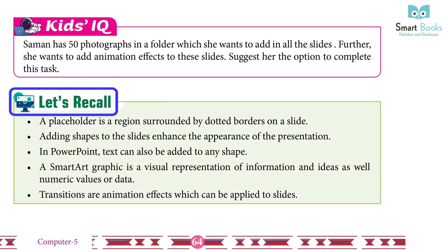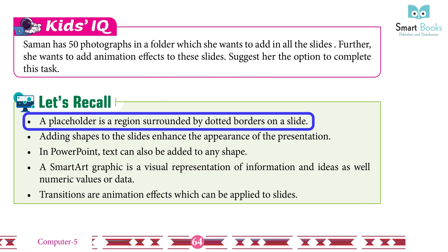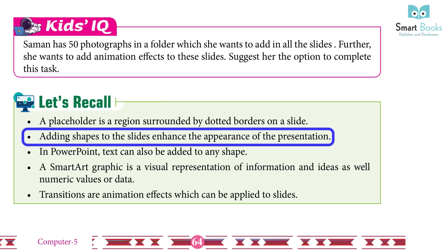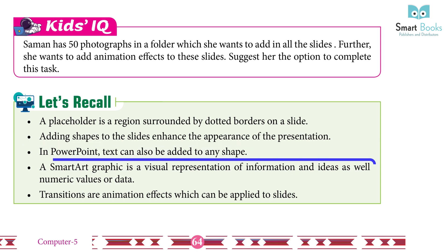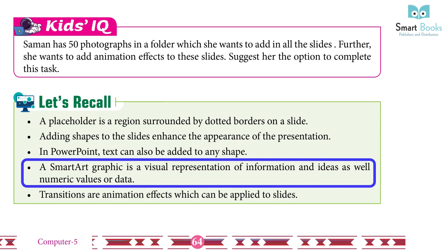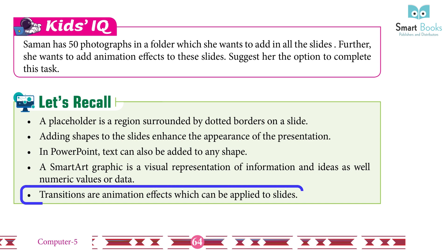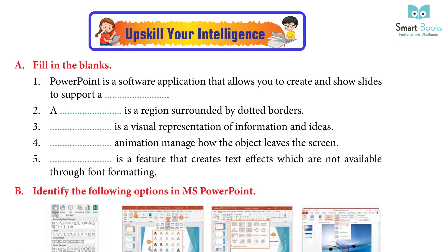Let's recall: A placeholder is a region surrounded by dotted borders on a slide. Adding shapes to the slide enhances the appearance of the presentation. In PowerPoint, text can also be added to any shape. A smart art graphic is a visual representation of information and ideas as well as numeric values or data. Transitions are animation effects which can be applied to slides.